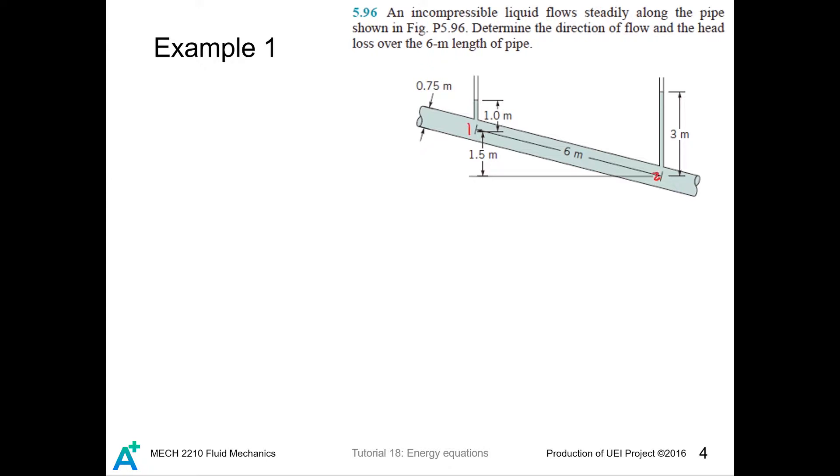So let's label this as point one and point two, and we assume that the flow direction is from one to two. And we let this as h1, this as h2, so we have p1 equals gamma h1 and p2 equals gamma h2. And we write down the mechanical energy equation.